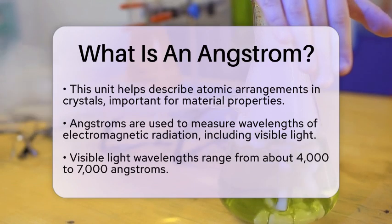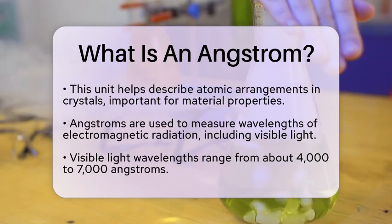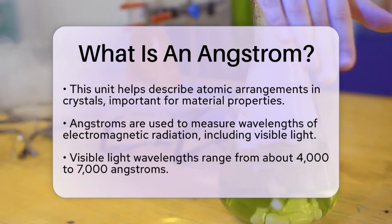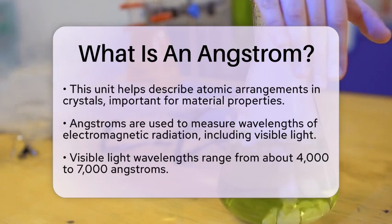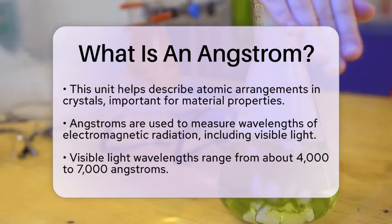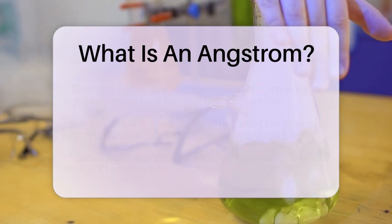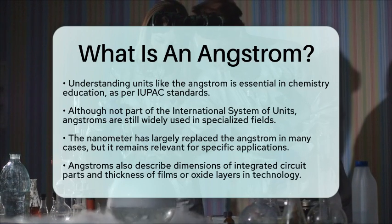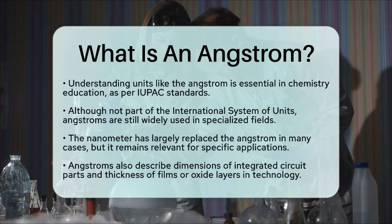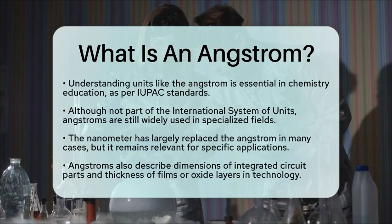This means that when you see light, it is measured in angstroms. In the context of IUPAC standards in chemistry education, understanding units like the angstrom is essential. It helps students accurately describe and measure chemical phenomena. While the angstrom is not part of the international system of units, it is still widely used in specialized fields. In many cases, the nanometer has replaced it, but the angstrom remains popular for certain applications.